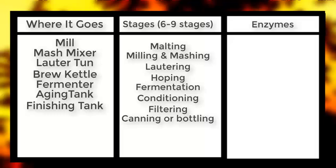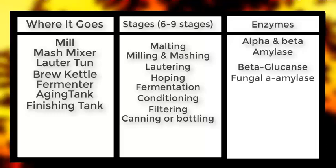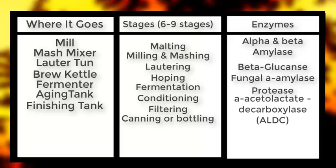There are roughly six to seven enzymes. You have alpha and beta amylase, beta-glucanase, fungal alpha amylase, protease, alpha-acetolactate decarboxylase — which we'll refer to as ALDC — and finally amyloglucosidase. I completely butchered those names. Quickly write that chart down; we'll note them off as we go through this video and refer back at the end to see what we covered.